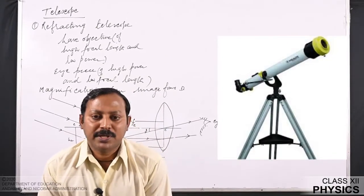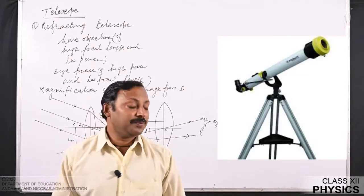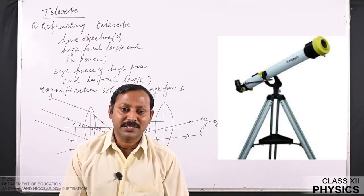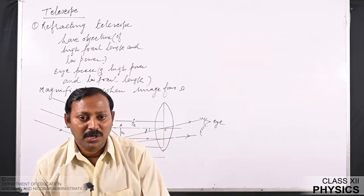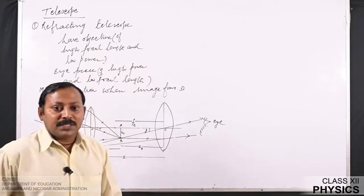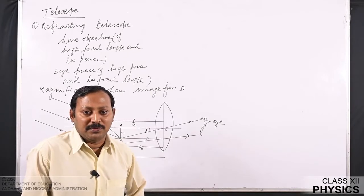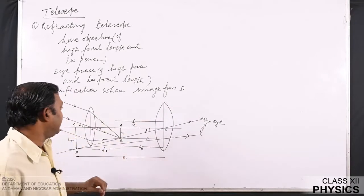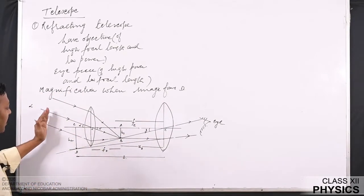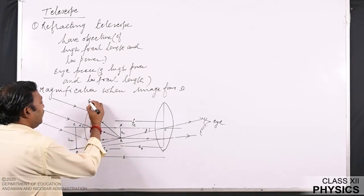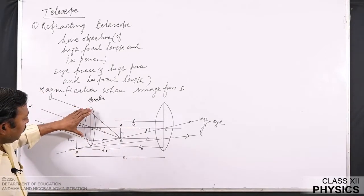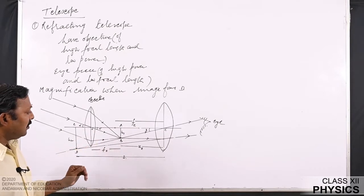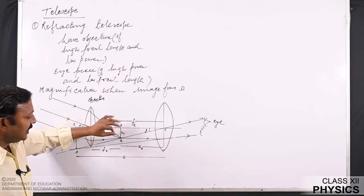Now we will see the telescope. A telescope is a device used to see celestial objects or heavenly objects. There are two types: refracting telescope and reflecting telescope. A refracting telescope uses lenses — one objective and one eyepiece. The objective has a large focal length and low power, while the eyepiece has a low focal length and large power. A parallel beam of light from infinity falls on the first lens acting as objective, and the refracted beam meets at a focal plane where an inverted image AB of height h1 from the principal axis is formed.